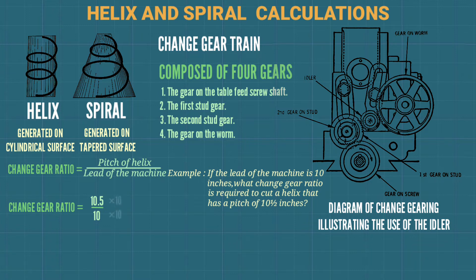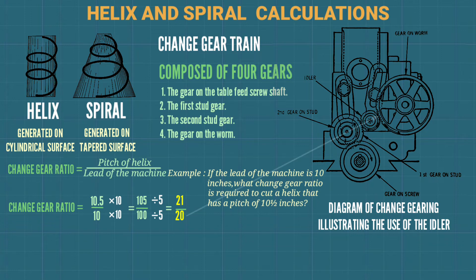10.5 divided by 10, multiplying both by 10 gives 105 over 100. Dividing both by 5 gives 21 over 20, or equivalently 42 over 40. So a 20-tooth gear is placed on the table pitch screw and a 21-tooth gear is placed on the worm.